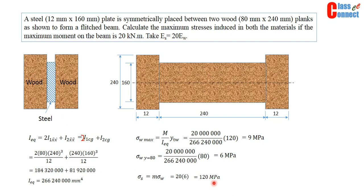So this is how we can solve this problem with equivalent section method. We can draw the stress distribution for this particular case. This is stress in wood, 9 MPa and 9 MPa, and this is stress in steel, 120 MPa, and it is 0 at the neutral axis.